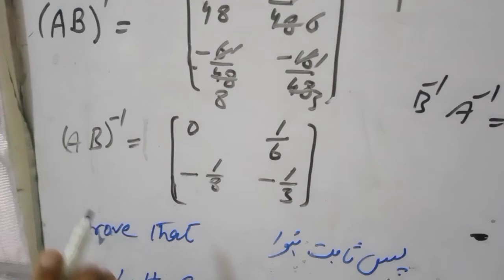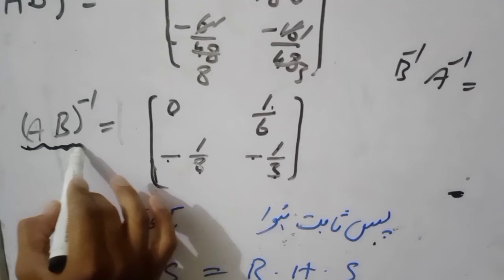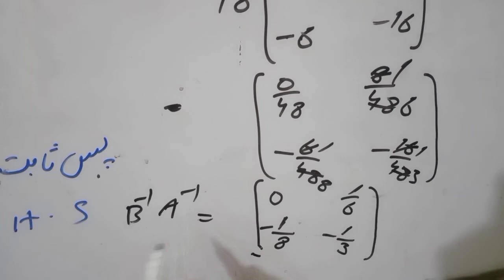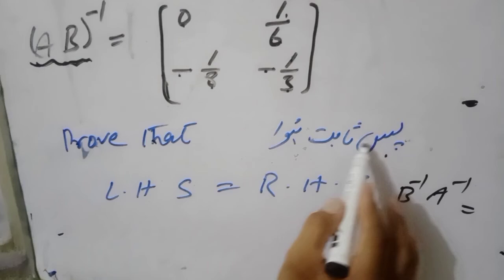Dear students यह right hand side हमने solve किया। अब देखते हैं: left hand side का जो answer आया था AB whole inverse = [0, 1/6; minus 1/8, minus 1/3] — दोनों sides हमारे पास equal आई हैं। तो इससे साबित हुआ: left hand side equal to right hand side. Dear students यह part number 1 था question number 6 का। इसका second part आप खुद attempt करेंगे, खुद कोशिश कीजिएगा।